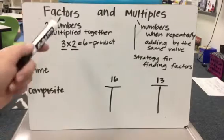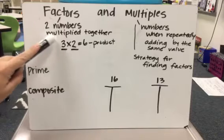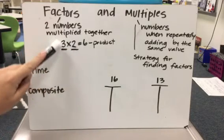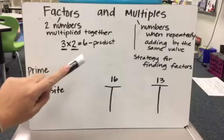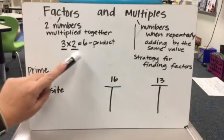So one of those key concepts is factors of a number. The factors are the two numbers that are being multiplied together. So here in this example, we have 3 times 2 equals 6, which really means three groups of 2 equals 6. 3 and 2 are our factors.